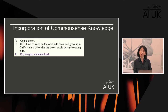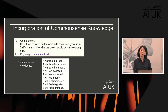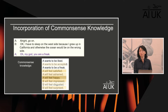Here we see the impact of incorporating common sense knowledge. Given a dialogue where we want to find the emotion for the utterance 'Oh my God, you're a freak,' without common sense knowledge the model erroneously infers the wrong emotion. However, using common sense knowledge about the person's intention, reaction, and the other person's reaction — with an attention mechanism to identify the most salient knowledge — the model correctly identifies 'happy and satisfied' as most important and infers the correct joyful emotion.